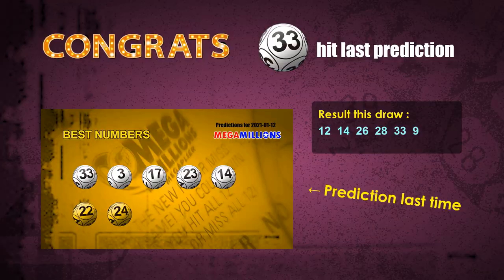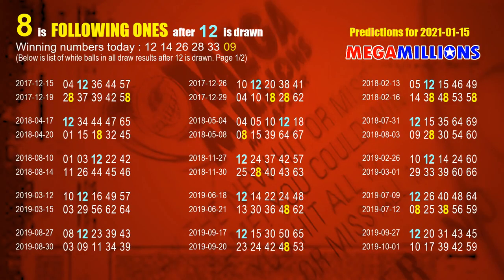First, let's find out the following ones through today's result. Following numbers refer to those numbers picked on the next draw after this one, and following ones are the units digits of those following numbers.